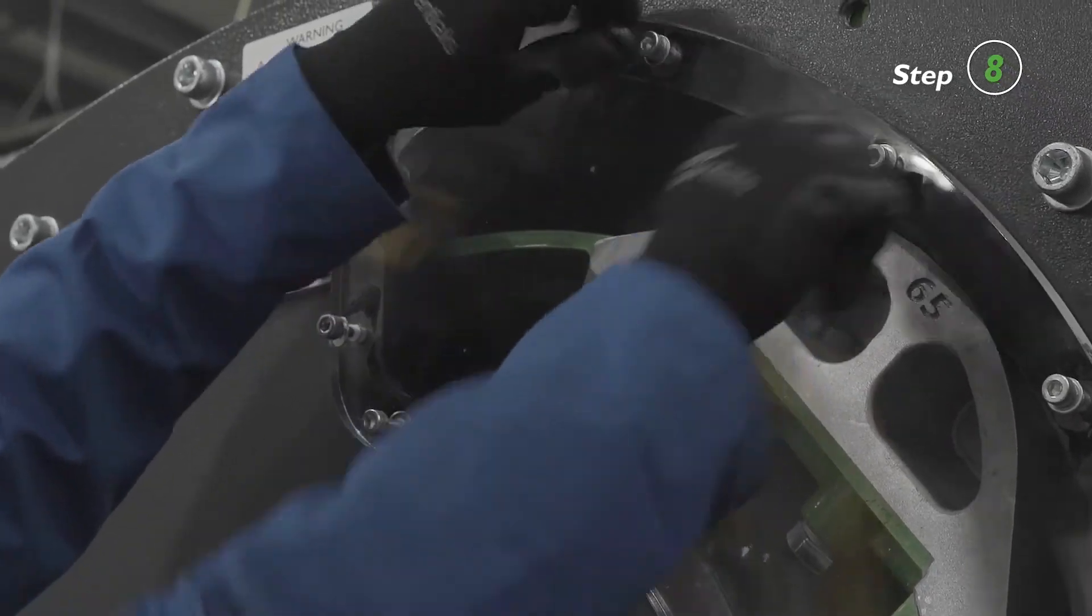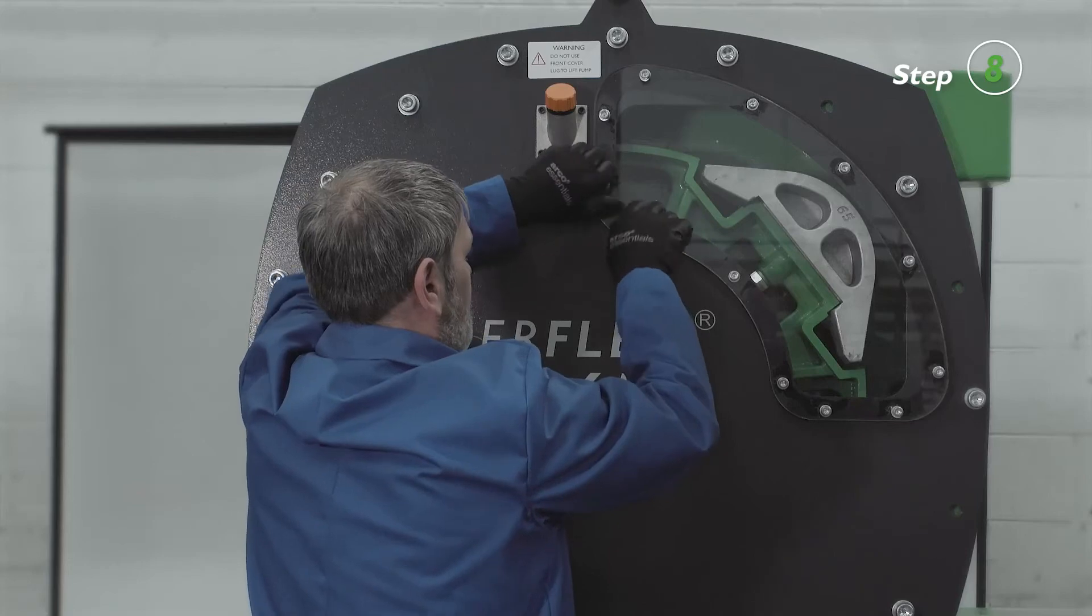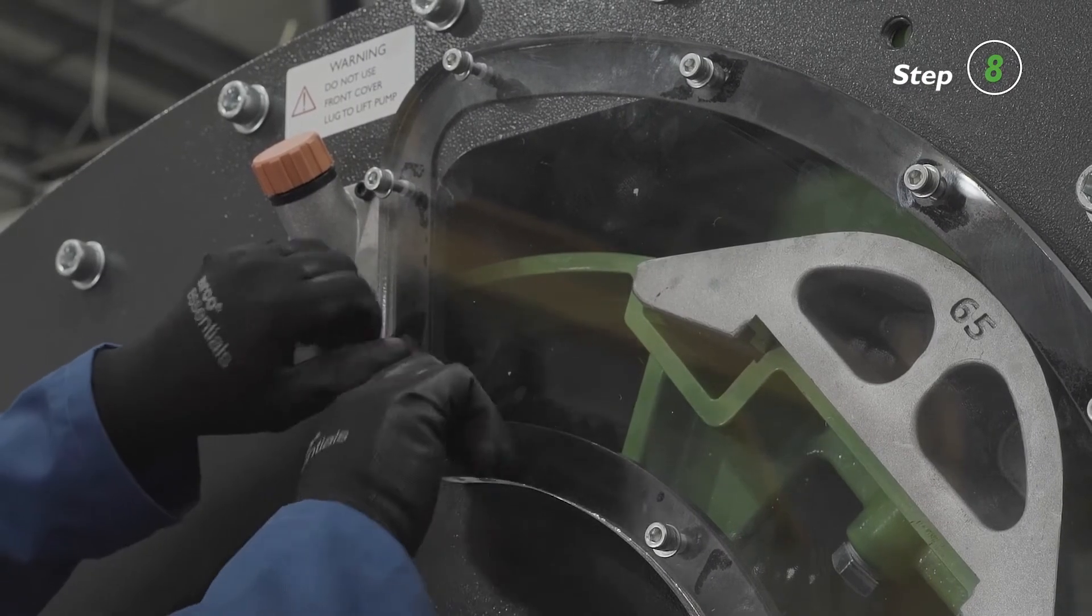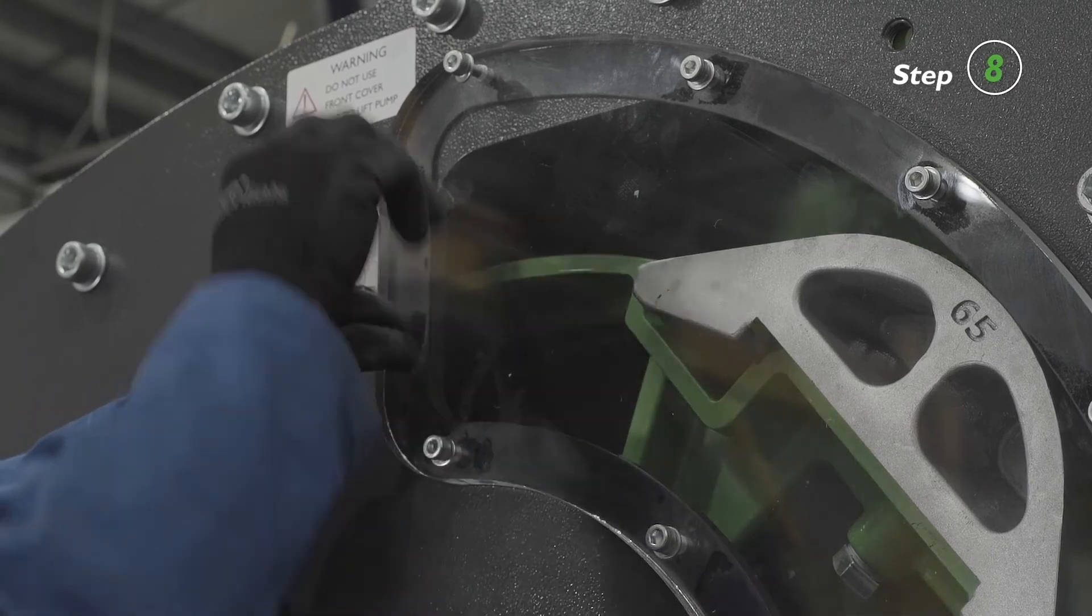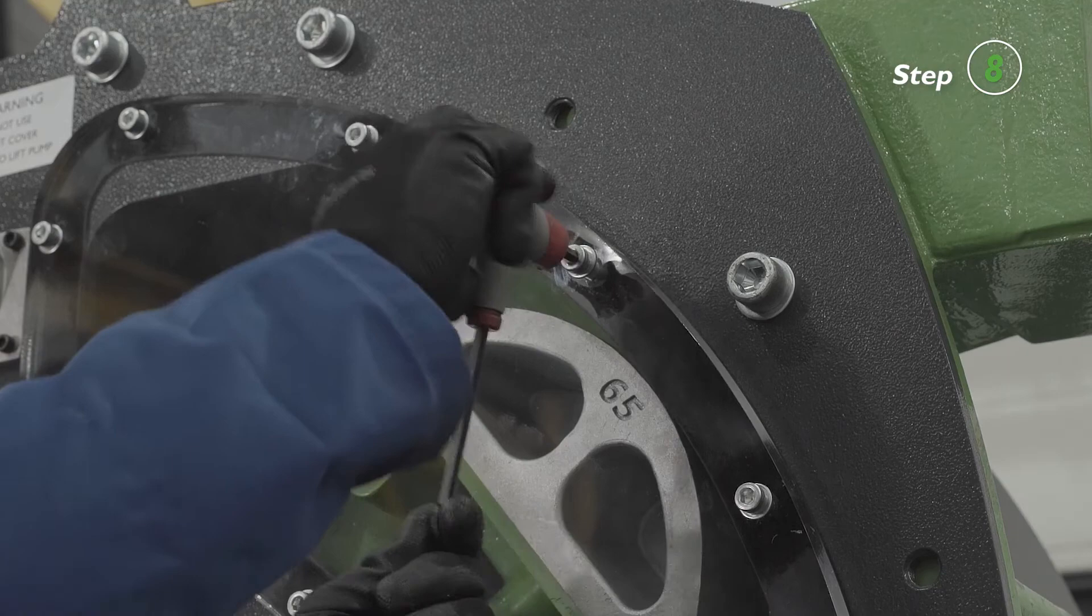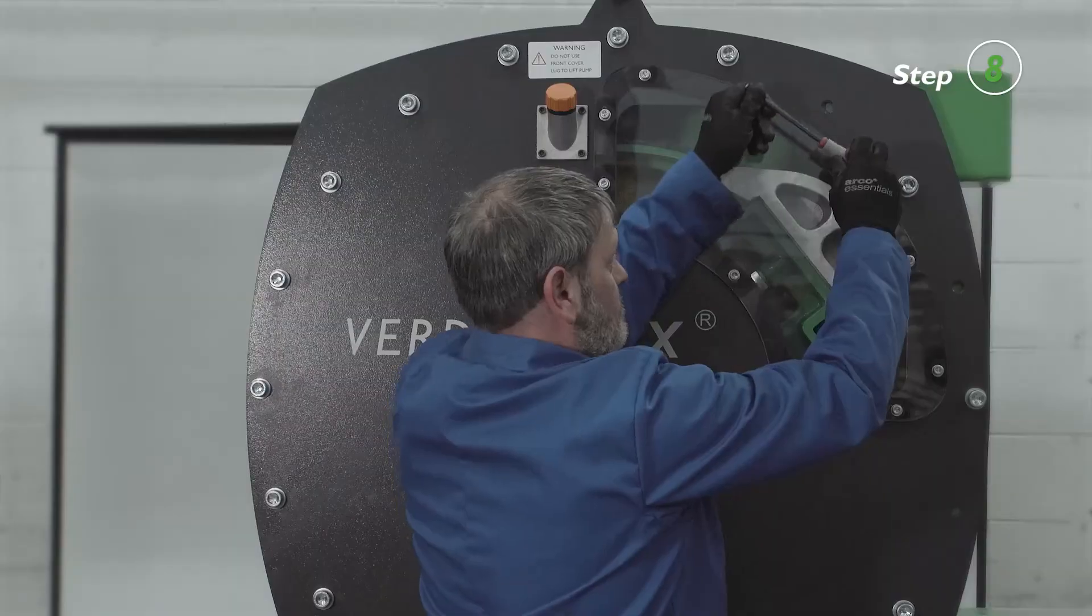Mount the window unit with the bolts and gasket over the front cover. Nip the bolts down in sequence. Ensure that the bolts are not over-tightened. For torque values, please refer to the Dura 65 manual, Appendix A.